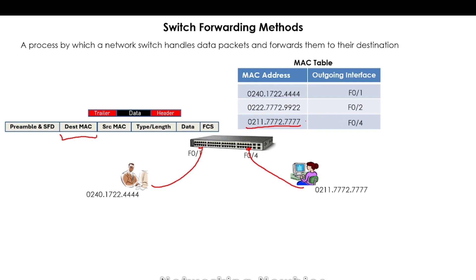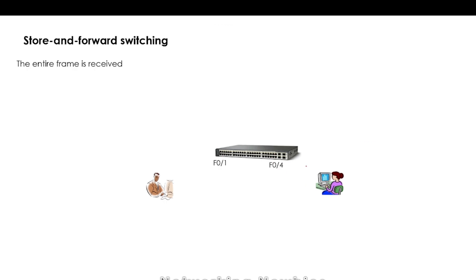The switch consults its MAC table to find an address matching the destination MAC address field. If it finds a match, it selects that particular port — for example, the MAC table shows the computer with that MAC address is connected with FA0/4 — and simply forwards the frame to that destination.